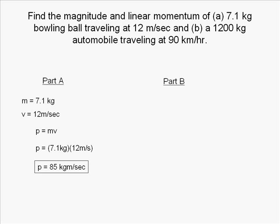In part B of this problem, we want to find the momentum of the 1,200 kilogram automobile traveling at 90 kilometers per hour. The first thing to do again is to write down our variables. Mass equals 1,200 kilograms and the velocity is 90 kilometers per hour.